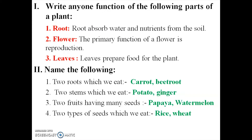First one: root. Root absorbs water and nutrients from the soil. Second one: flower. The primary function of a flower is reproduction. This is a very important one.